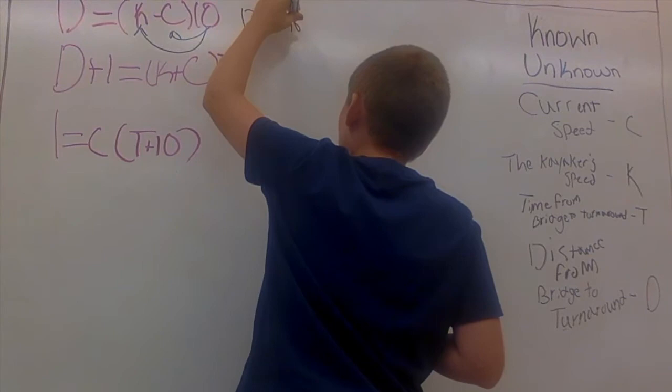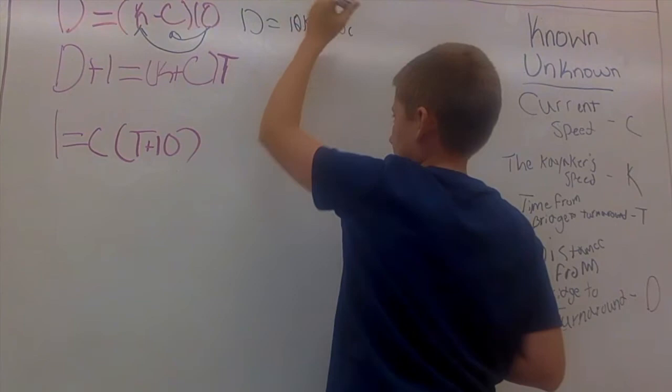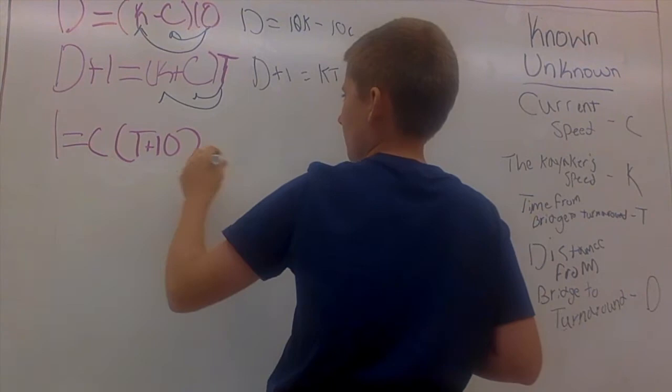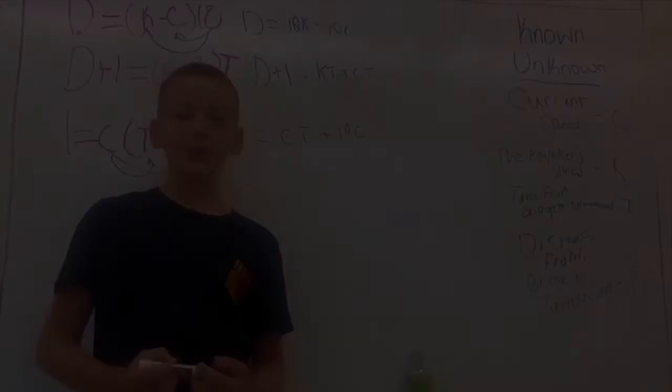And then you distribute the T in the same way, so you have D plus 1 equals KT plus CT. And then in the last one you distribute the C, so that you have 1 mile equals CT plus 10C.